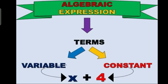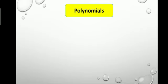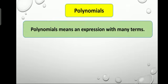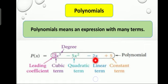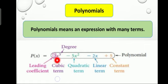In Algebraic Expressions, the first thing to discuss is polynomials. Polynomials mean an expression with many terms. The simple whole number is represented as a constant term. The term in which a variable has a power of 1 is said to be the linear term. When the power of a variable is 2, it is the quadratic term. When the power is 3, it is the cubic term. The number with the highest degree of variable is said to be the leading coefficient.